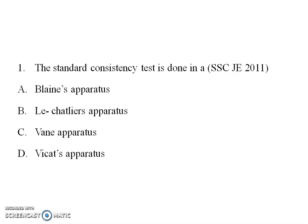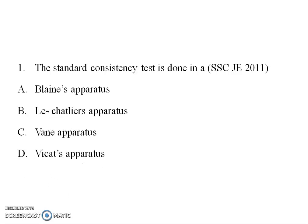The vane apparatus is used for soil. Le Chatelier apparatus is used for soundness. Blaine's apparatus and Vicat apparatus are used for fineness, and Vicat apparatus is used for setting time. So the answer is option D: Vicat apparatus.